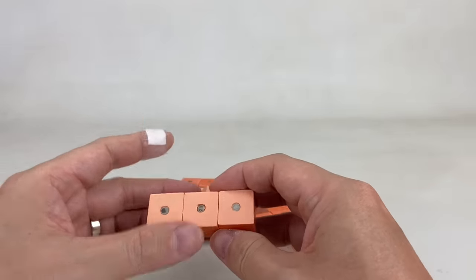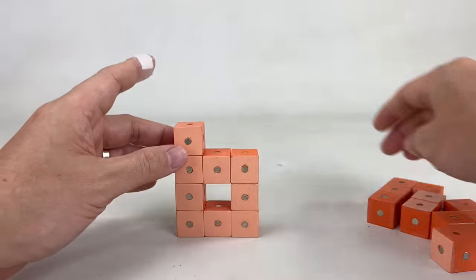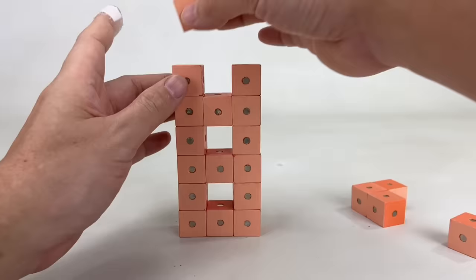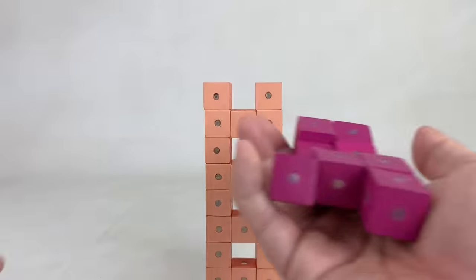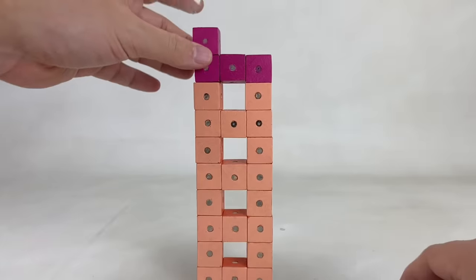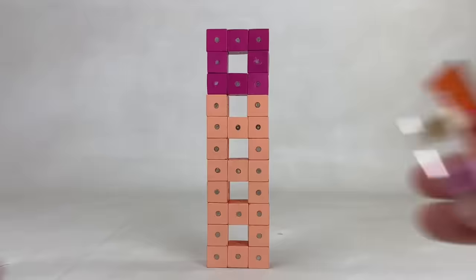Next, let's build, do you know who? That's right, NumberBlock 28. 28 is a pattern pioneer, and she's usually seen as a tower with windows. She's made up of 20 light orange blocks and 8 pink blocks, and she can make lots of patterns.